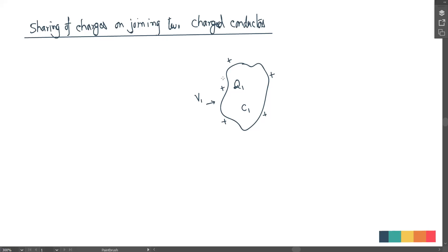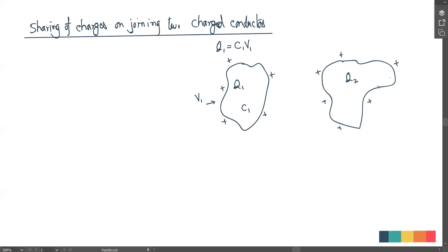Assuming it to be a separate isolated conductor, you can write q1 equals c1 times v1. Let's assume it's a positive charge. And again, the same thing will apply for the second case — we can write q2 equals c2 times v2. This is the scenario before connection.